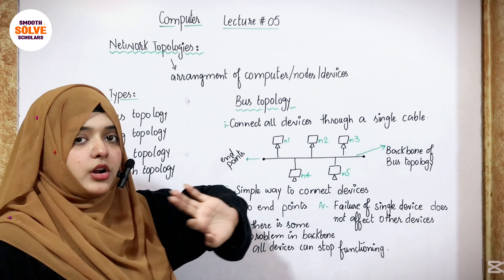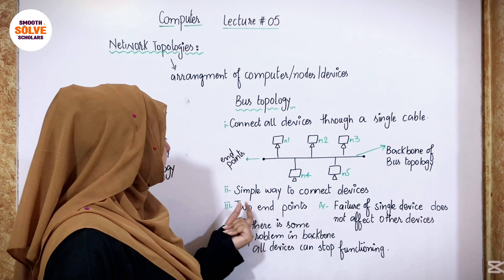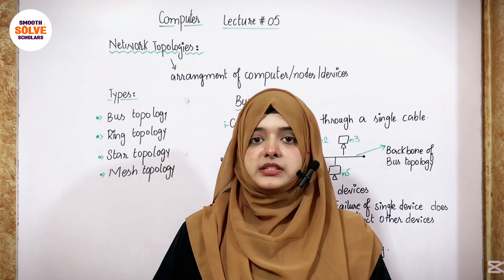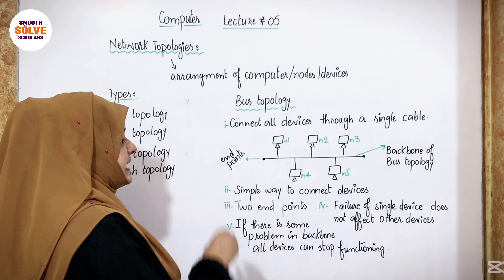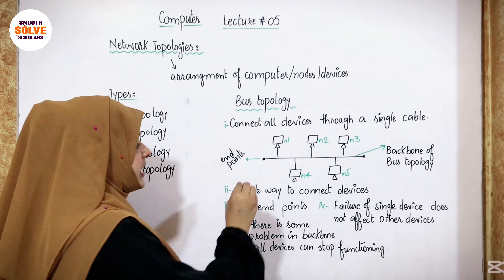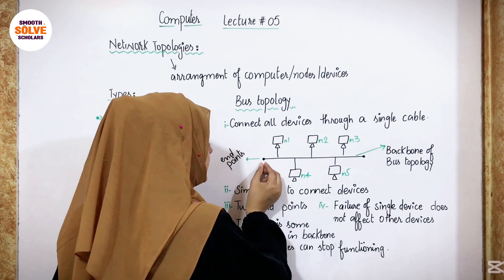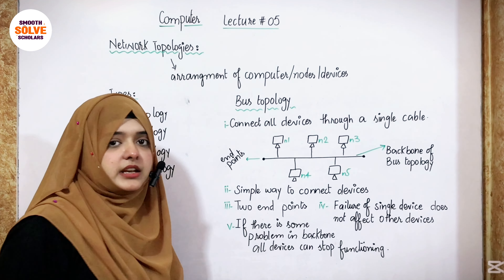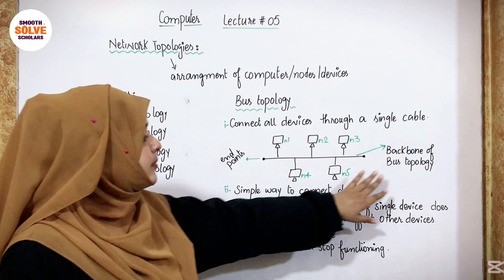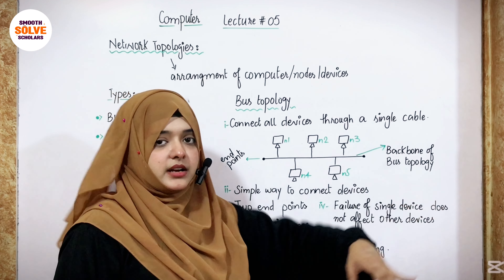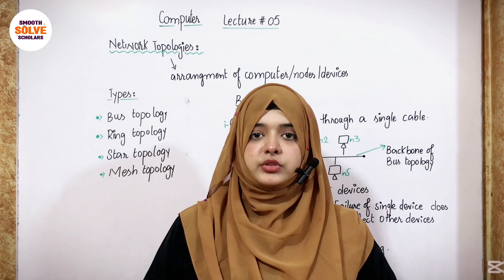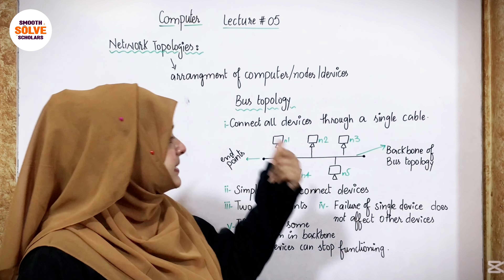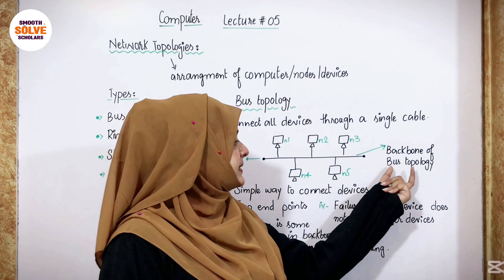The single cable is called the communication medium. This is the easiest and simplest topology. The cable has exactly two endpoints, and this cable is called the backbone of bus topology. Just like in vertebrates where all body functions depend on the backbone, in bus topology all functions depend on this backbone.